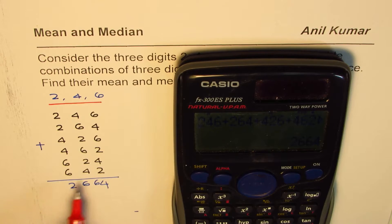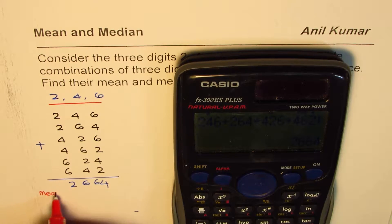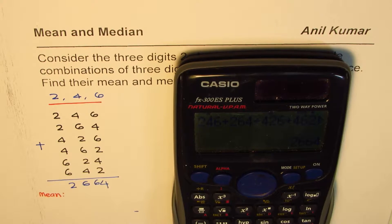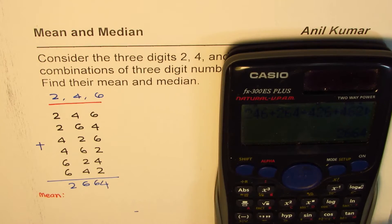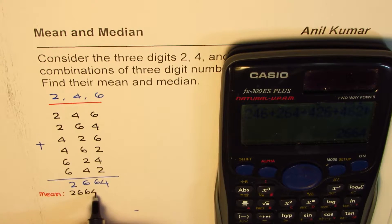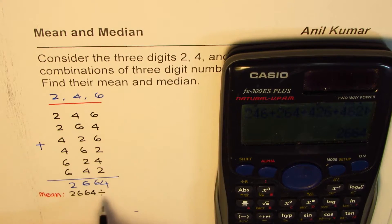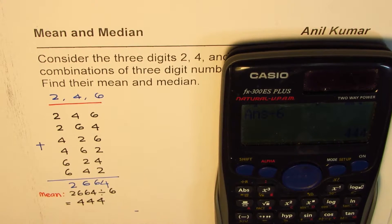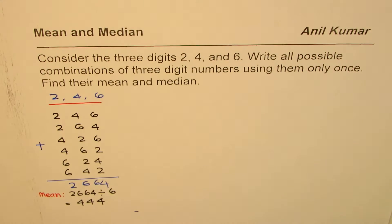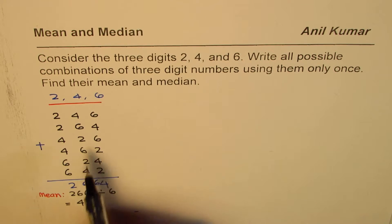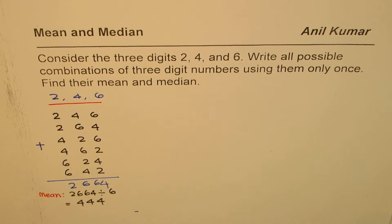To find the mean, we have to divide this by 6. So, let's find mean for this. So, mean will be, we need to divide this number 2664 by total number of numbers which are 6. So, let's divide this by 6 and see what do we get. We get mean as equals to 444. So, that is how you find mean. Just add all the numbers and divide by the number of numbers.